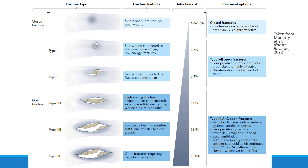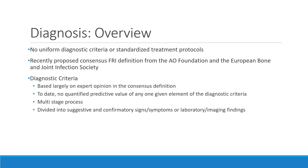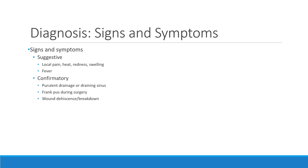There is no uniform diagnostic criteria or standardized treatment protocol for FRI. Recent proposed consensus FRI definitions from the AO Foundation and the European Bone and Joint Infection Society are what I'll discuss today. These are largely based on expert opinion, and there is currently no quantified predictive value of any one given element. The diagnostic criteria are temporally structured — a multi-stage process depending on patient signs and symptoms, laboratory values, intraoperative findings, and culture. These findings are divided into suggestive and confirmatory signs and symptoms, laboratory, imaging, and histological findings.